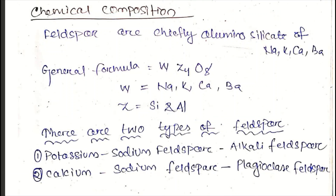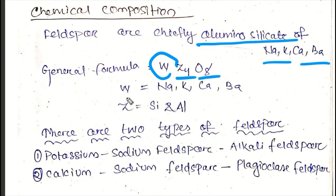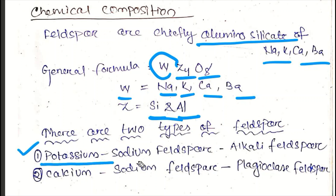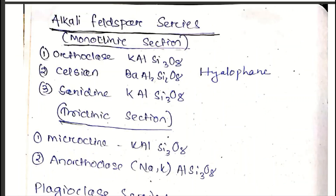The chemical composition of the feldspar group: feldspar is the aluminum silicate of Na, K, Ca, and Ba. The general formula is W(Z4O8), where W is Na, K, Ca, or Ba, and Z is Si or Al. There are two types of feldspar: alkali feldspar, which is potassium-sodium feldspar, and plagioclase feldspar, which is calcium-sodium feldspar.